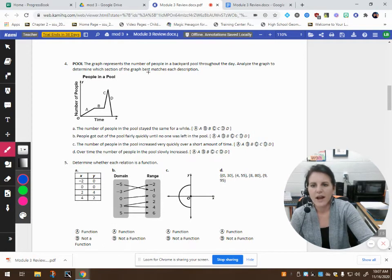Number four, the graph represents the number of people in a backyard pool throughout the day. Analyze the graph to determine which section of the graph best matches each description. So, we're scrolling along here. This is the number of people in the pool throughout the day. So, it looks like a steady amount of people are coming into the pool up to here. Then, the same amount of people remain in the pool over this given interval of time. Then, a few more people come to the pool. And then, slowly, everybody starts to get out of the pool.